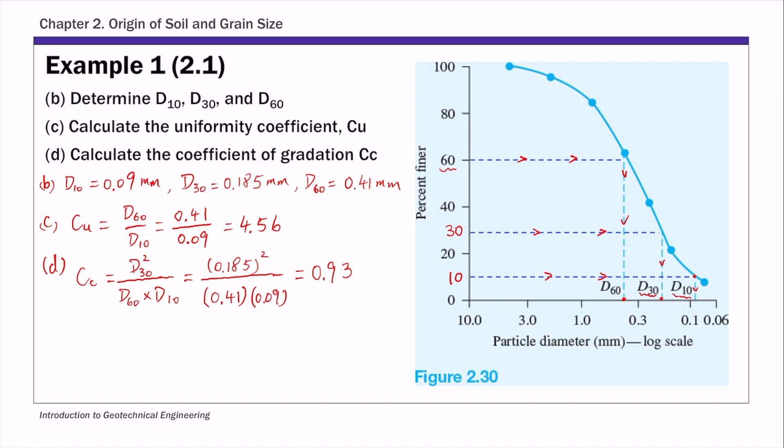So that's the first example of plotting particle size distribution curve using sieve analysis data, and then obtaining those parameters from this PSD curve.